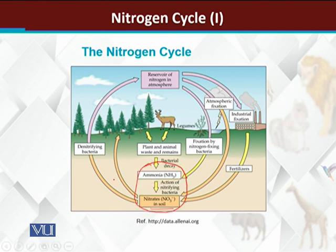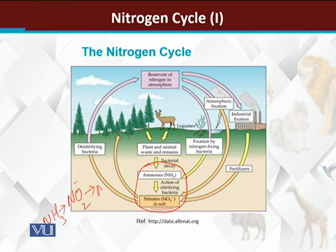This nitrification process has two steps: in the first step, ammonia is converted into nitrite, and in the second step, nitrite is converted into nitrates.